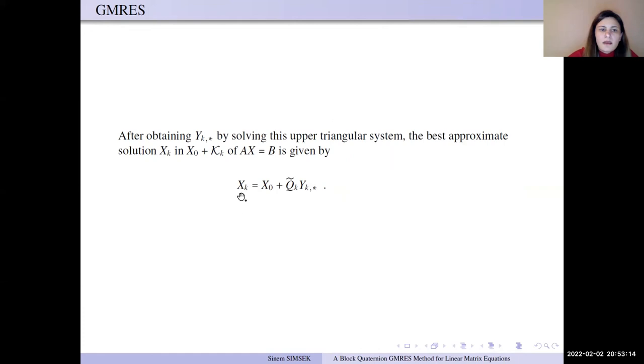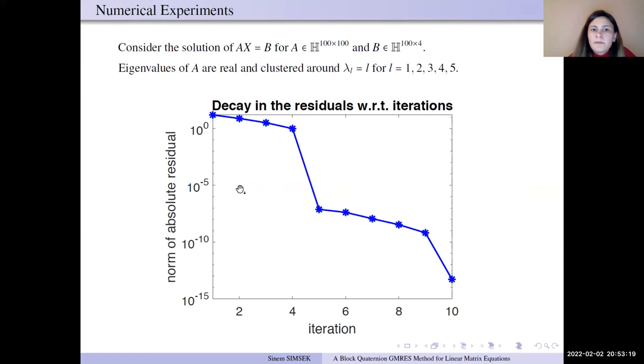Now, this numerical example. First example: AX equals B, quaternion matrices. But the matrices A, these A values are real, and it has eigenvalues with five clusters. The residual norm versus iteration. It can be seen that the residual norm decreases a lot after five iterations.